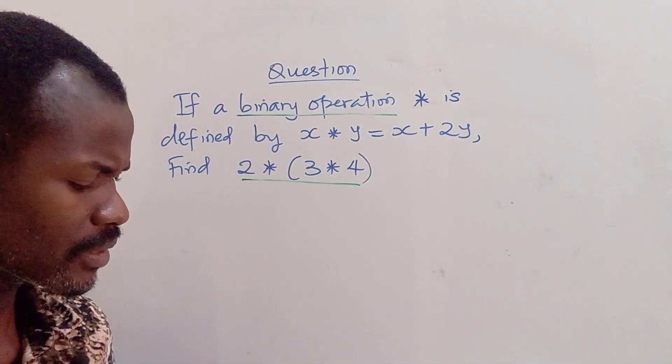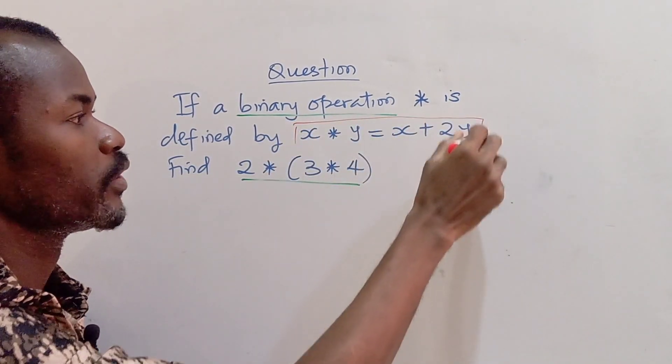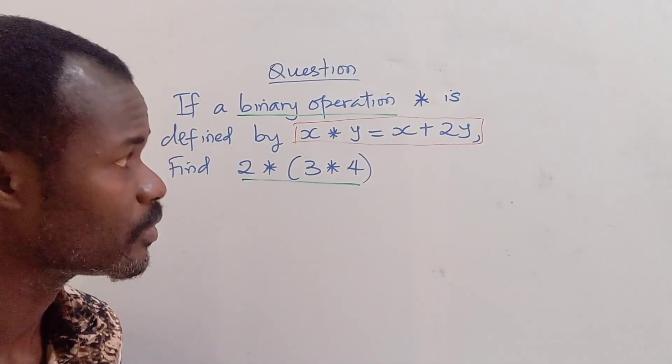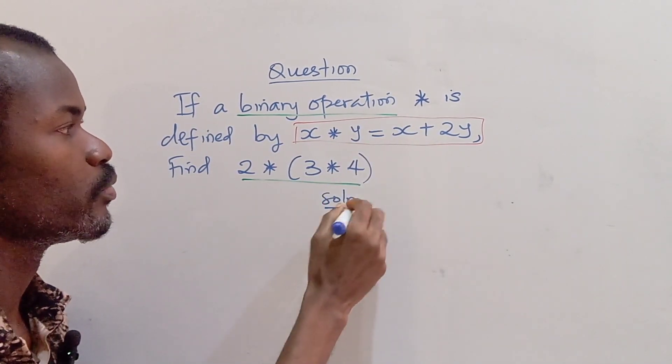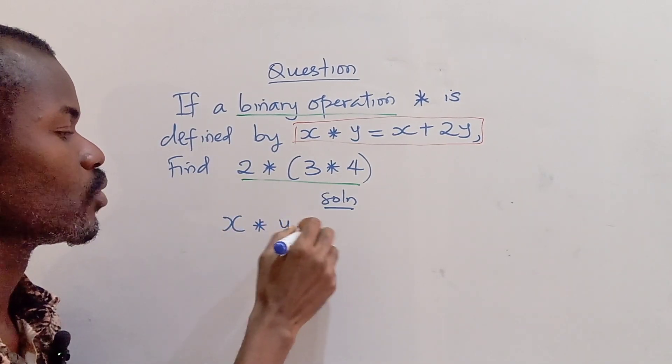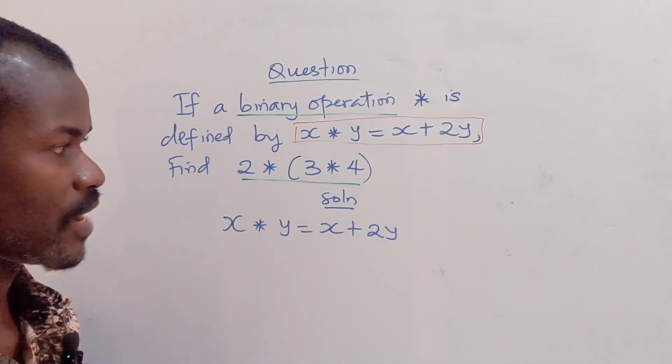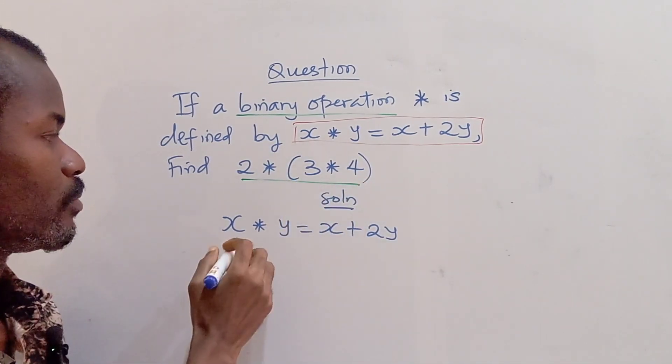The first thing we want to do is bring down the operation because that's what we are going to use in solving this problem. We have to be substituting into this operation. So the operation says that x asterisk y equals x plus 2y.